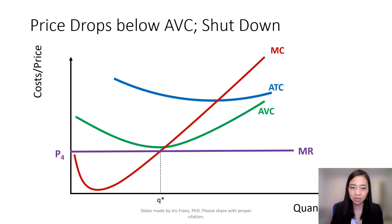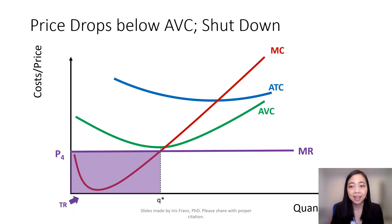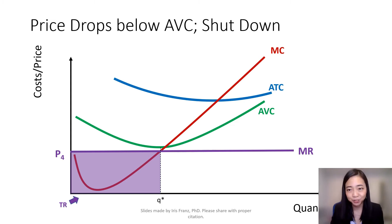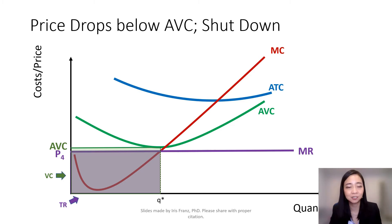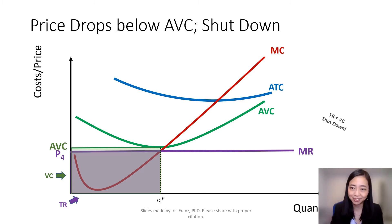So here is your total revenue, P4 times Q star — that's the purple shaded area. And here is your variable cost. It is equal to average variable cost times quantity, which is the green shaded area. As you can see, your variable cost is higher than your total revenue, and therefore you should shut down.